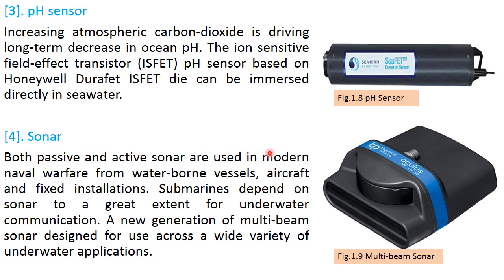pH sensor. Figure 1.8 shows a sample of a pH sensor used frequently for underwater navigation systems. Increasing atmospheric carbon dioxide is driving long-term decreases in ocean pH. The ion-sensitive field effect transistor pH sensor (ISFET), based on the ISFET design, can be immersed directly in sea water. This is useful to measure the pH level of sea water.